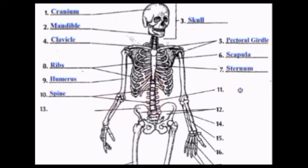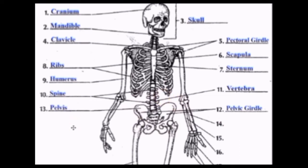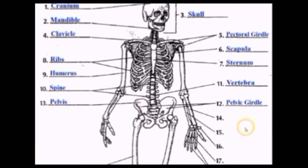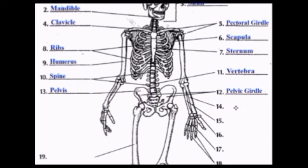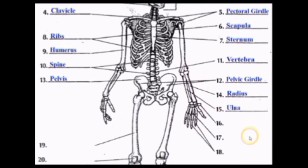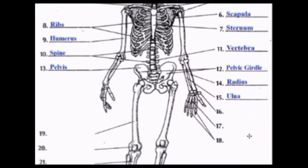The Vertebra is the individual bone that makes up your spine. The Pelvic Girdle is composed of the entire hip area, which includes the pelvis. Moving to the lower arm bones — on the thumb side is the Radius, and on the pinky side is the Ulna. And the Carpals are your wrist bones.